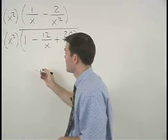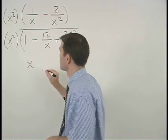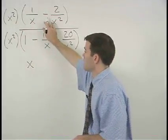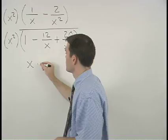x squared times 1 over x is x, and x squared times negative 2 over x squared is negative 2.